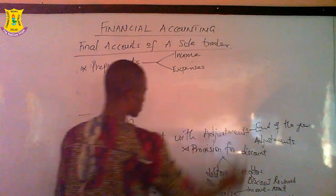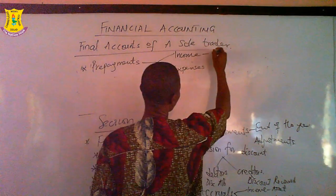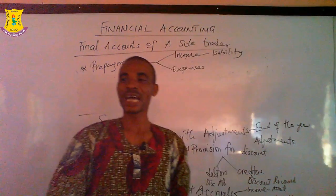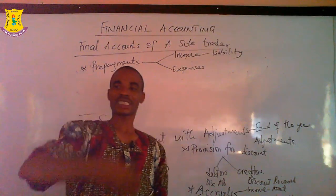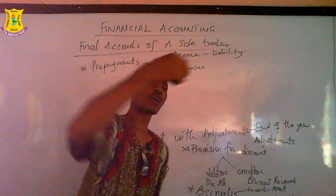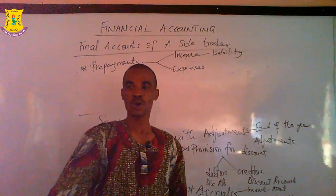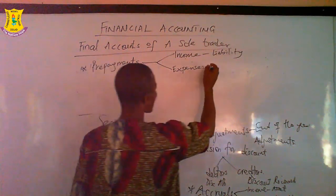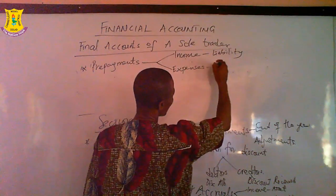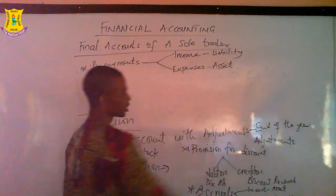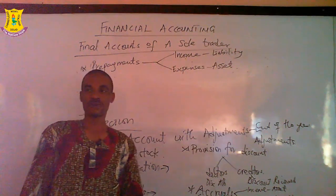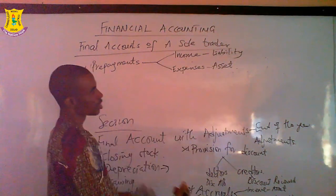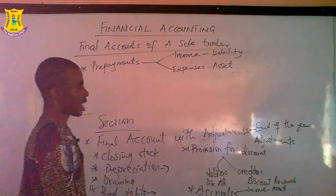Prepayments also come in the form of income and expenses. When income is prepaid, it is treated as a liability, because even though money is coming to you, if it is not yet due and you received excess, the person can come back to ask for the excess they paid — so that makes the money a liability. While prepaid expenses are treated as an asset in the balance sheet.